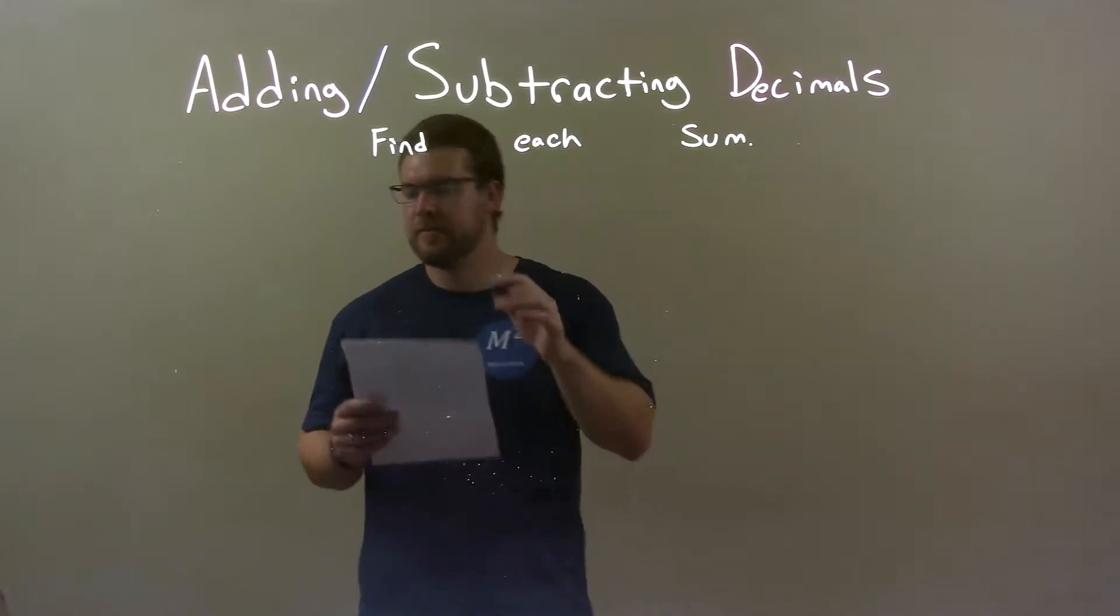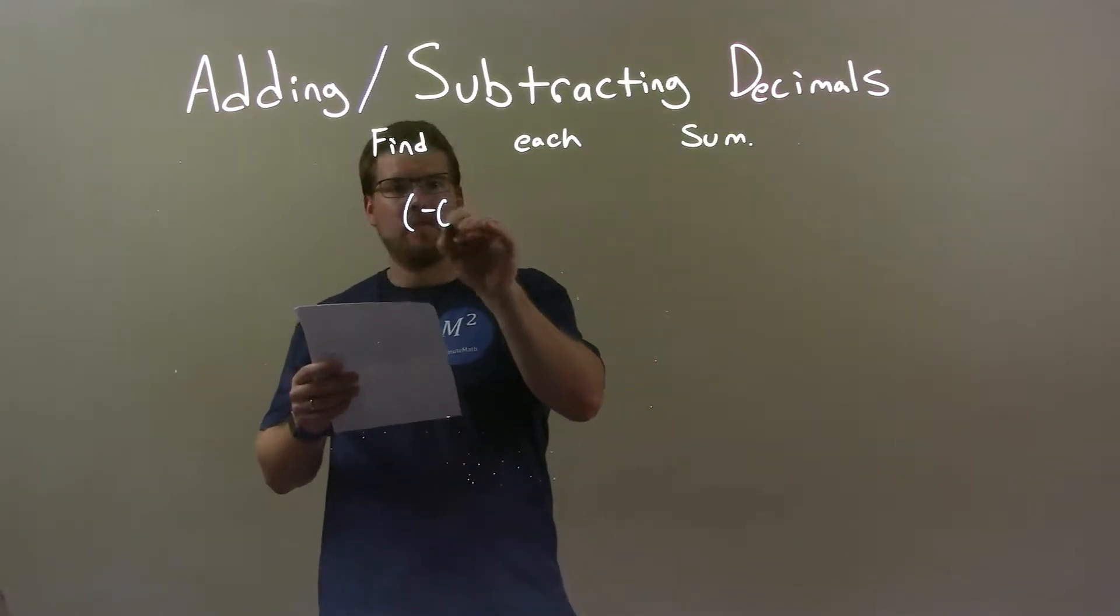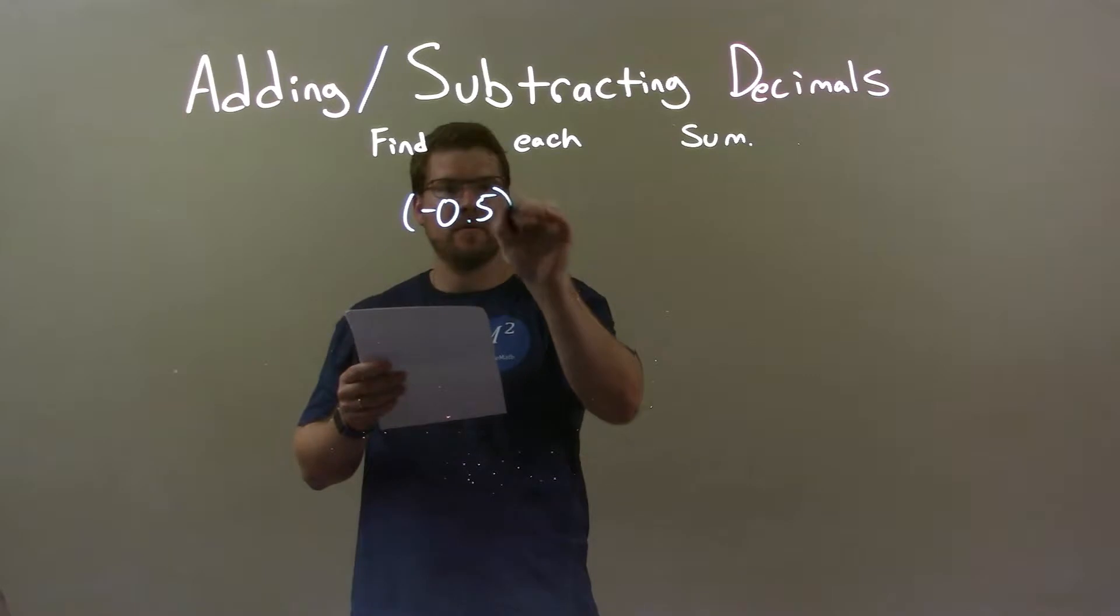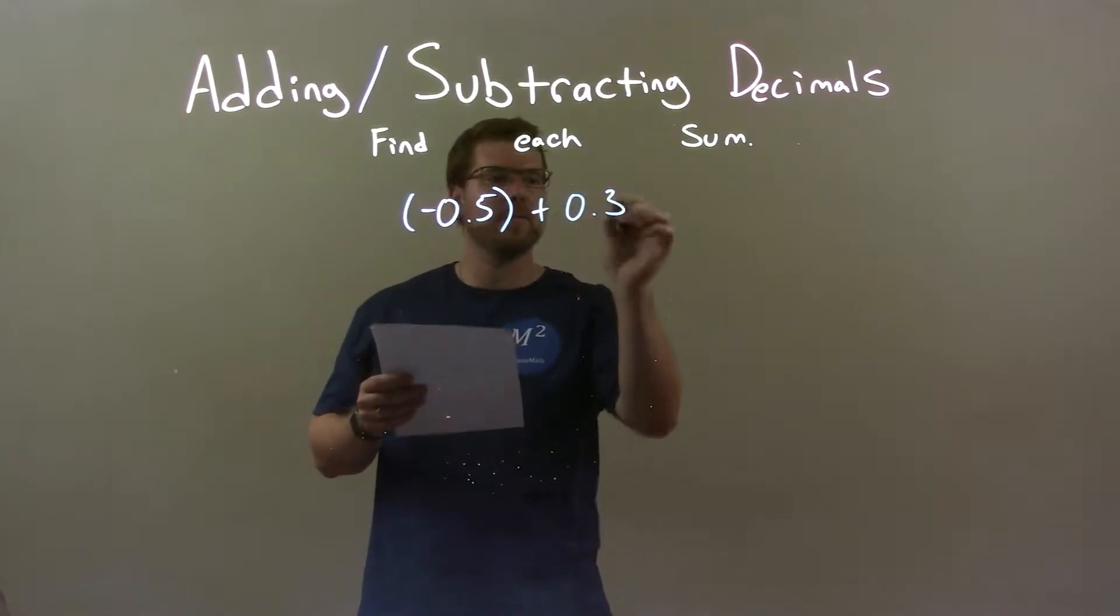So the problem is given this: negative 0.5 plus 0.3.